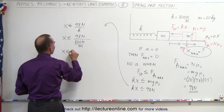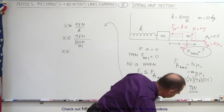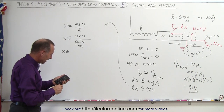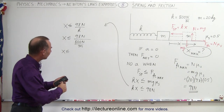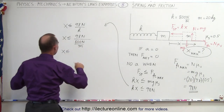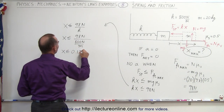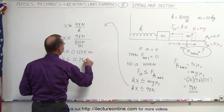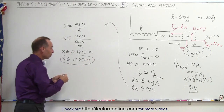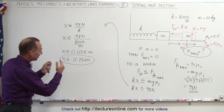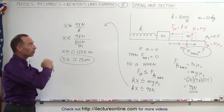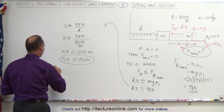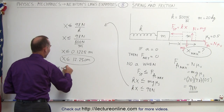So x is less than or equal to 0.1225 meters, or 12.25 centimeters. As long as the distance you pull the mass out is less than or equal to 12.25 centimeters and you let go, the block will stay in place.